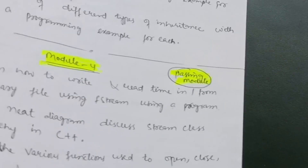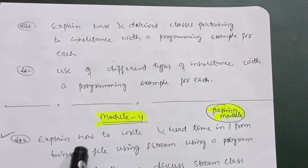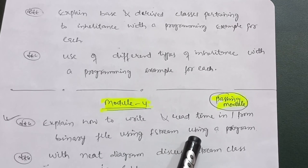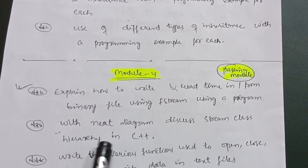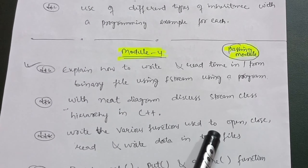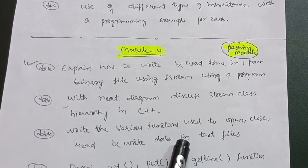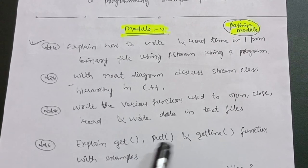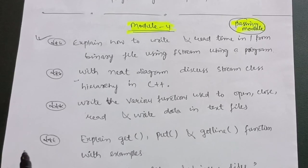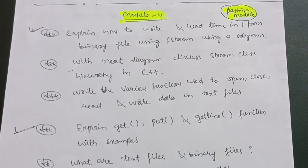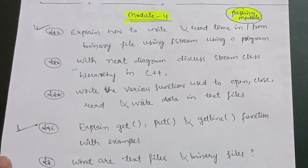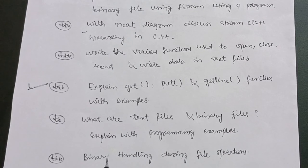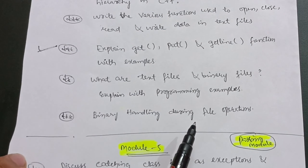In Module 4, you need to cover: explain how to write and read data from binary files using fstream with a program and a neat diagram; discuss stream class hierarchy in C++; write the various functions used to open, close, read, and write data in text files; explain getc, putch, and getline functions with examples — this is the most frequently asked question in VTU examinations, including the 18 scheme. Finally, explain text files and binary files with programming examples and binary handling during file operations.